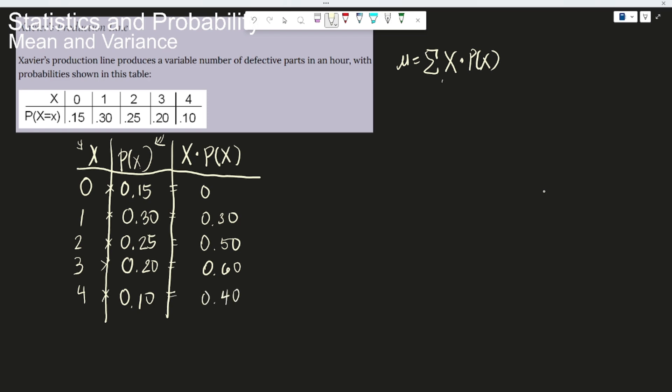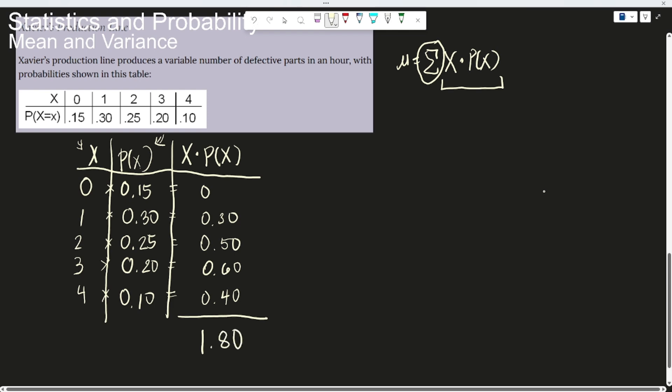And then, that's what we did. We multiply the x and the p of x. And after that, what we have to do is we have to add all of them. So the sum of this would be equal to 1.80. So this will be your mean. Okay?